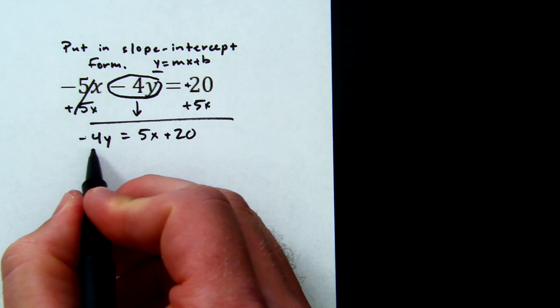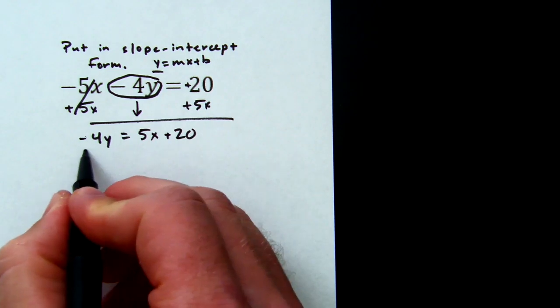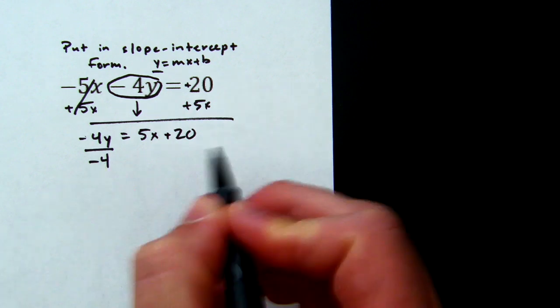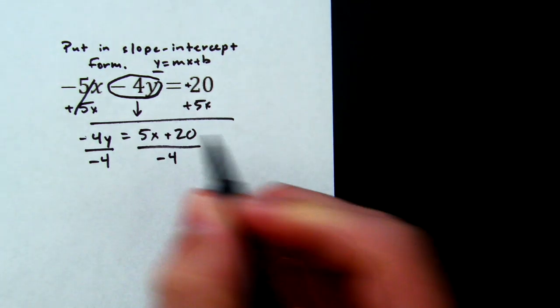Now, this -4 is being multiplied to the y. So to move it, to get y by itself, we need to divide by -4. And whatever we do to one side, we need to do to the other.